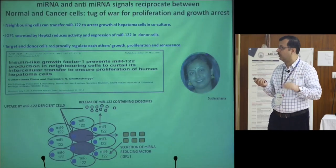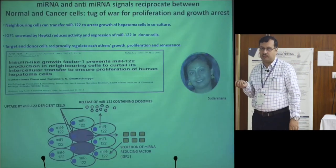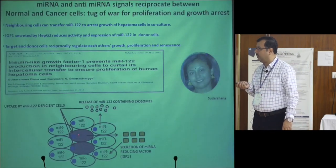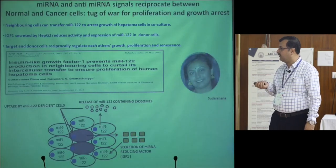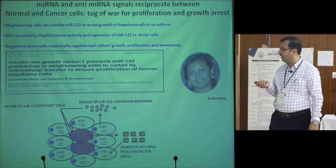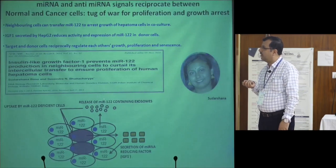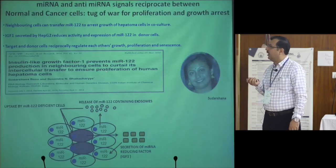MicroRNA-122 is an anti-proliferative microRNA. If you keep two cell lines, one with and one without miR-122, the cells lacking microRNA are more proliferative. The microRNA-expressing cells secrete exosomes containing miR-122, which are taken up by the cancer cells to reduce their growth. On the other hand, the cancerous cells secrete insulin-like growth factor 1, which acts on miR-122 production in neighboring cells and reduces its expression. Sudarsana showed that IGF-1 prevents miR-122 production in neighboring cells to curtail intercellular transfer and ensure proliferation of human hepatoma cells.